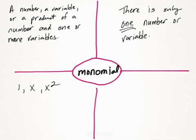You just have to remember for a monomial there's only one number or variable. Now I could have 3x squared, that would still be considered a monomial, not a polynomial.